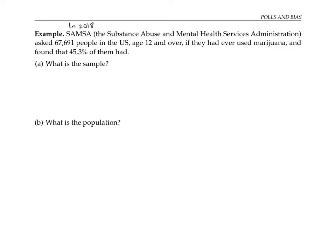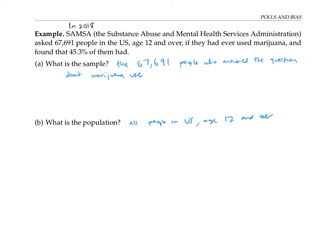Here's an example. In 2018, SAMHSA asked 67,691 people in the US — people aged 12 and over — if they had ever used marijuana, and found that 45.3% of them had. In this example, the sample is the 67,691 people who answered the question, and the population of interest is probably all people in the US age 12 and over. We want to use the percentage of the sample to make an inference about the percentage of the entire population that use marijuana.